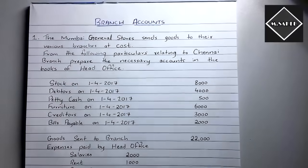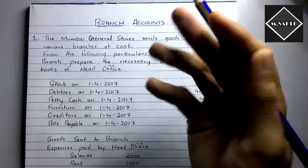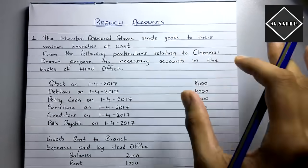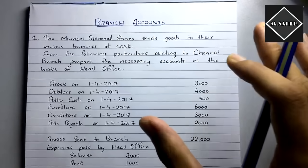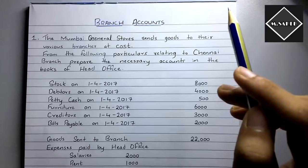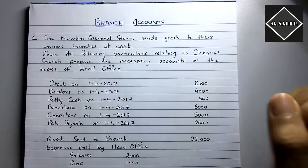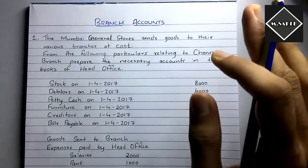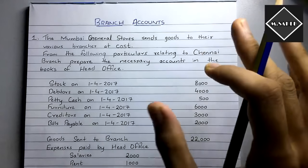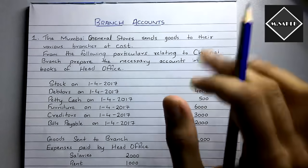In the last video we started a new chapter called branch account. We saw the concept of branch account, the structure, and different types of methods under different types of branches. We started with the first method, the debit system method, and saw the format of branch account. If you haven't watched that video, please go watch it first, otherwise you'll get confused.